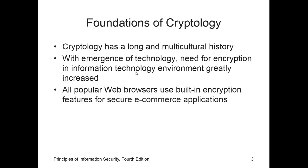The algorithm of encryption is the mathematical formula used to convert an unencrypted message into an encrypted message. Encryption is associated with many terms we need to understand, such as cipher. A cipher is the transformation of the individual components — characters, bytes, or bits — of an unencrypted message into encrypted components. With a cipher, we are actually hiding that message.